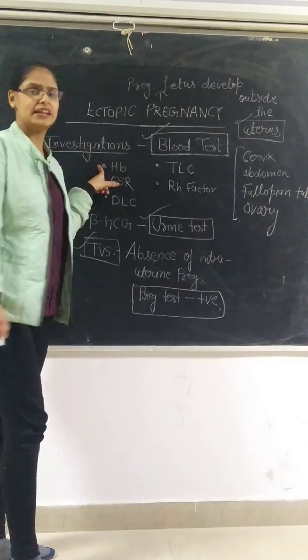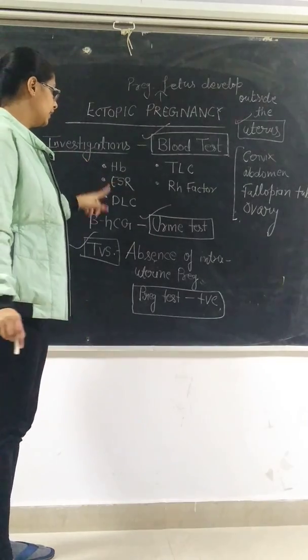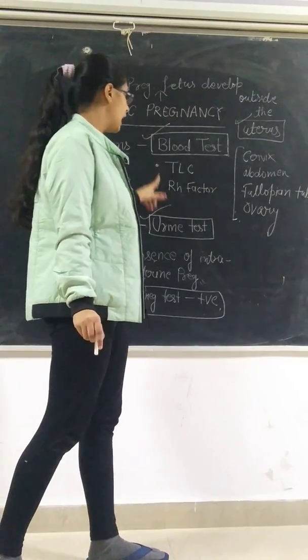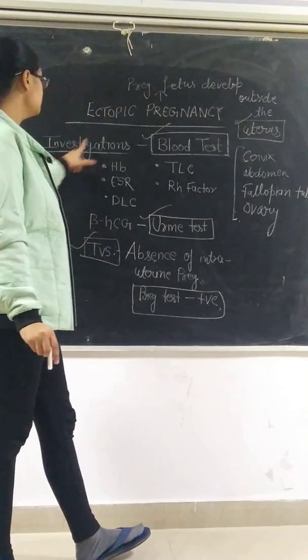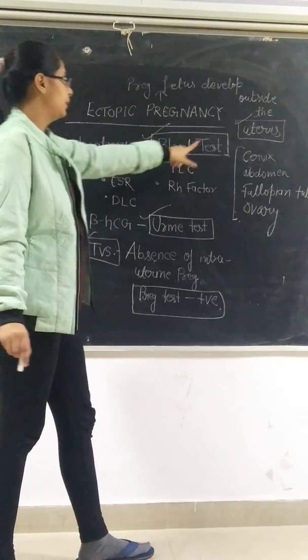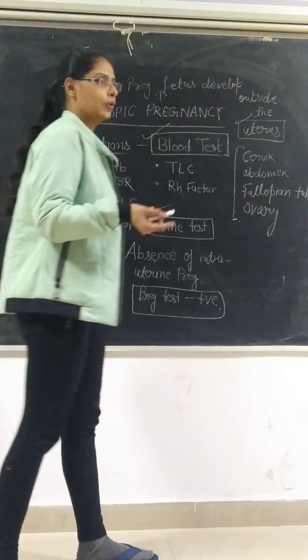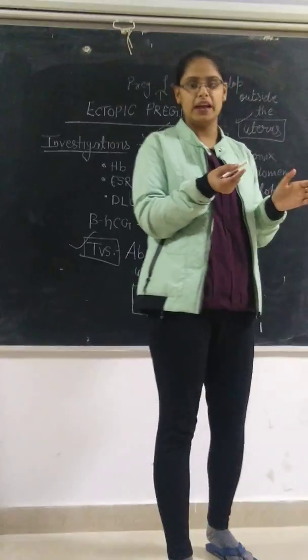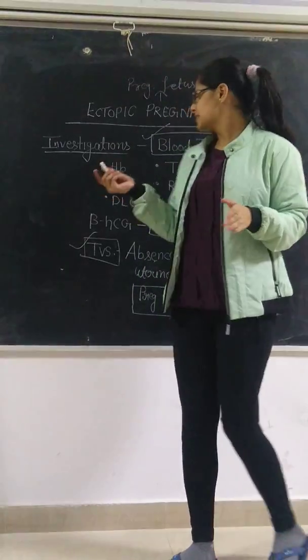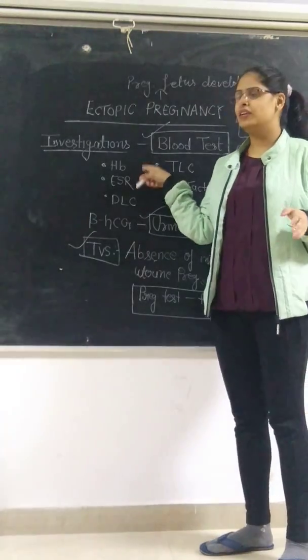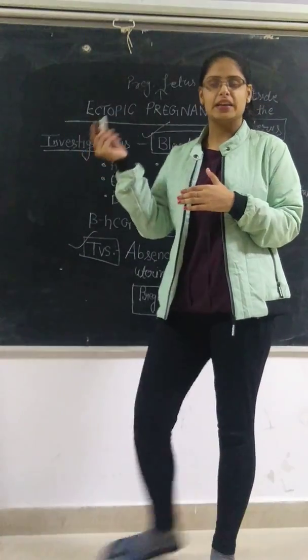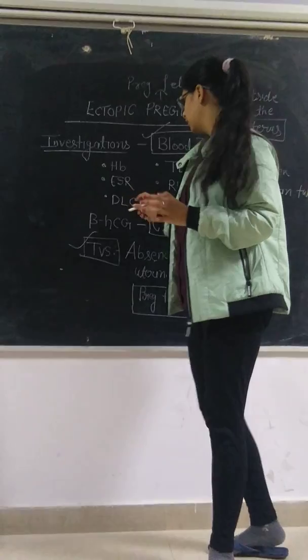First one is blood test. In blood test we have hemoglobin test, ESR, DLC, PLC, RH factor - all these things we have to investigate in the blood test. We have to check hemoglobin level, ESR level, then we have to check DLC.